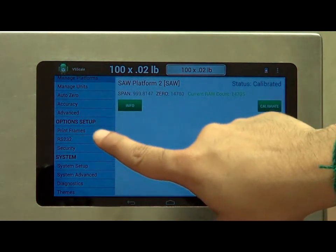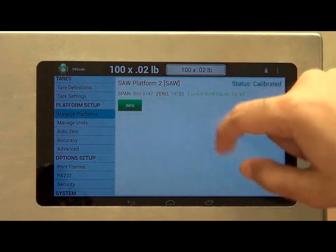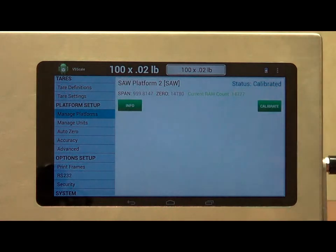In this screen, we can look at the status of the current platform. We see the calibrated span, the calibrated zero, and the current row count. We know the scale is working fine if we see this row count moving.